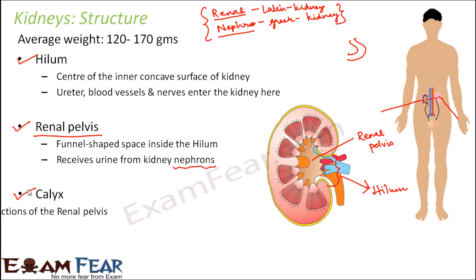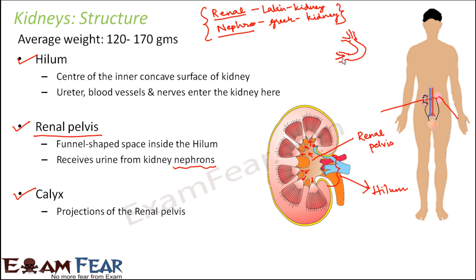The next part is the calyx — projections of the renal pelvis which are small hollow tubes through which urine reaches the renal pelvis. The funnel-shaped renal pelvis has sub-projections or branches. Calyx is the singular term and calyces is the plural. There are two types: minor calyces and major calyces.